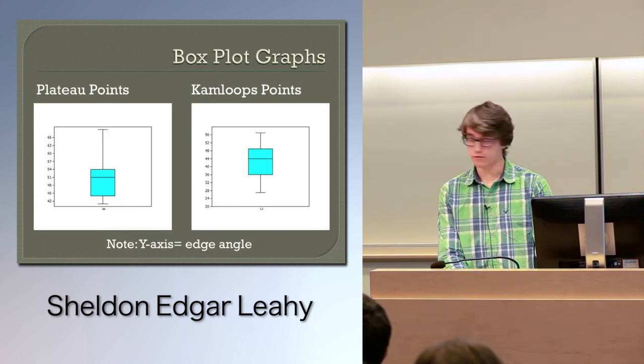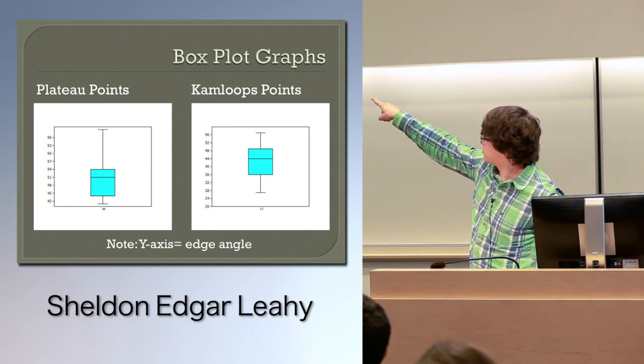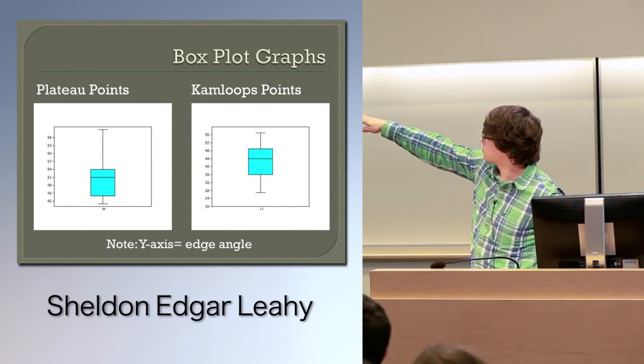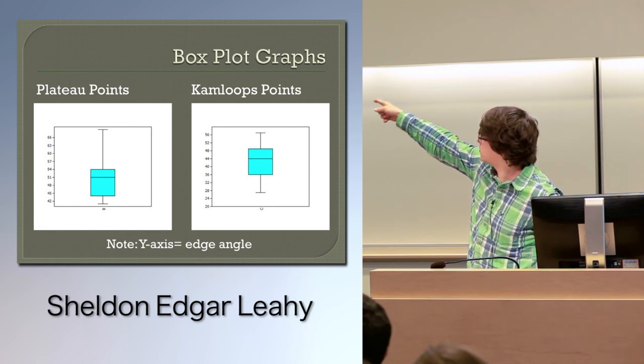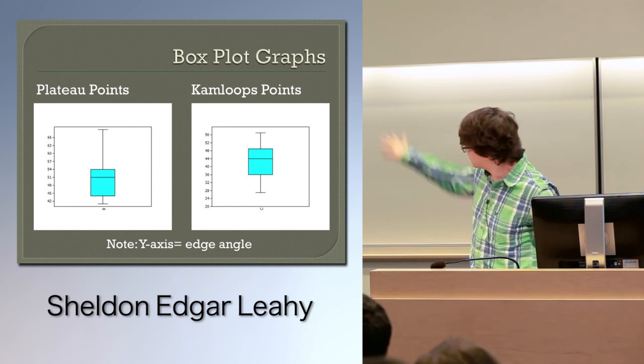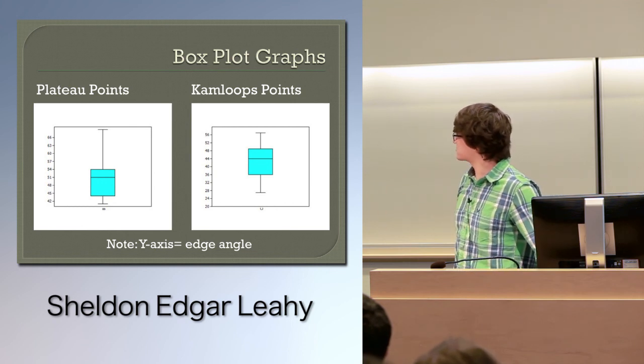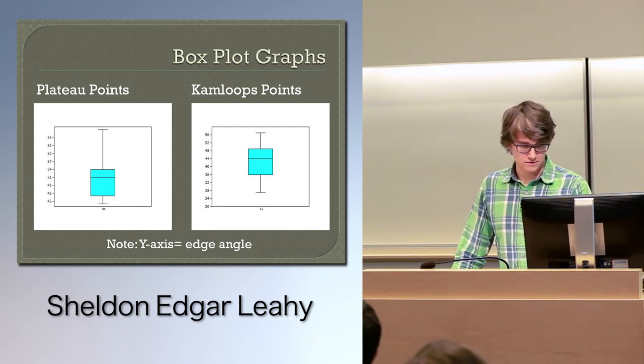This is shown in this box plot graph. The plateau points, even though it looks smaller originally, the mean is around 51, while the Kamloops point, the mean is around 44.